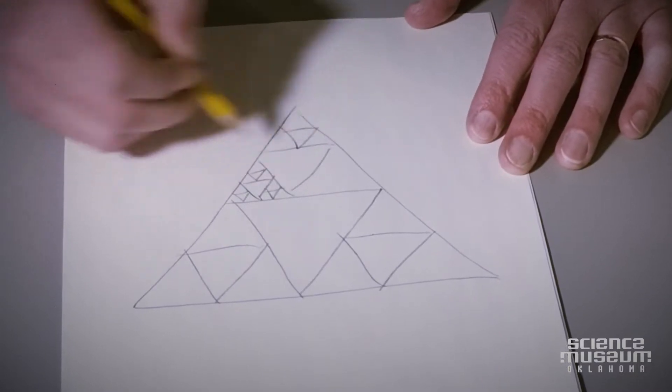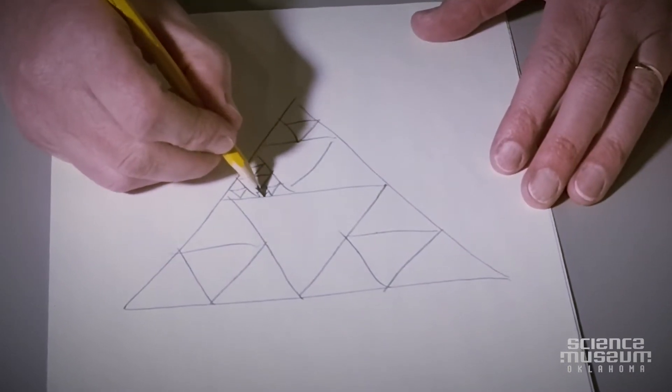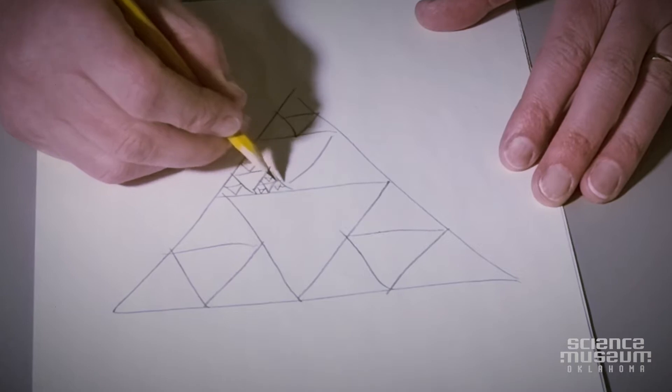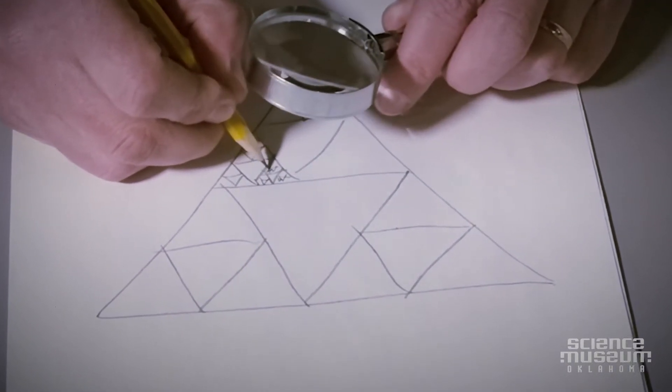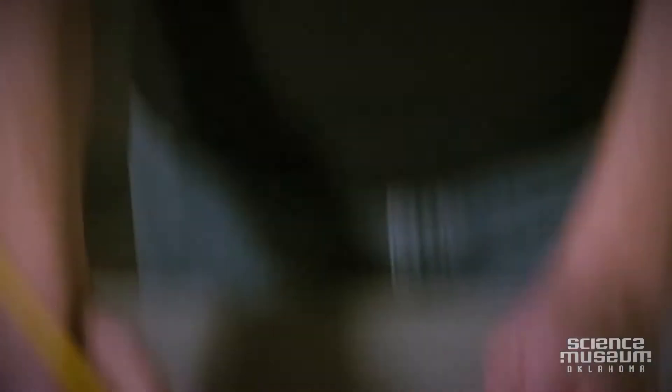You will see that the little pieces look just like the big piece and you can keep going. If you get your magnifying glass and a really sharp pencil you can keep going until your pencil isn't sharp enough to go anymore.